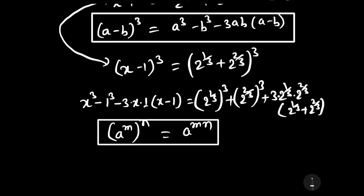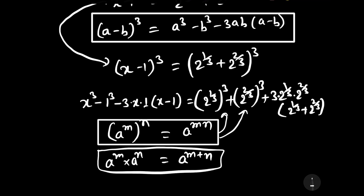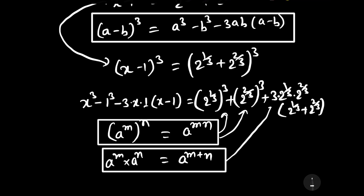With the help of this formula, we will solve this term. Another indices rule is: a to the power m times a to the power n is written as a to the power m plus n. With the help of this formula, we will solve this term.